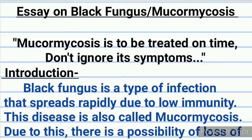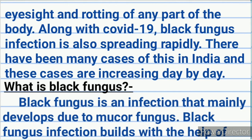We will start our essay with an awareness slogan to make it more impressive. Our slogan is: mucormycosis is to be treated on time, don't ignore its symptoms. Introduction: black fungus is a type of infection that spreads rapidly due to low immunity. This disease is also called mucormycosis. Due to this there is a possibility of loss of eyesight and rotting off any part of the body.